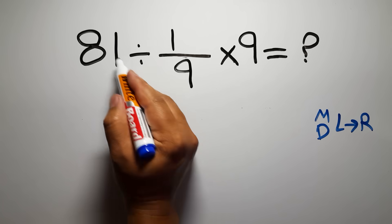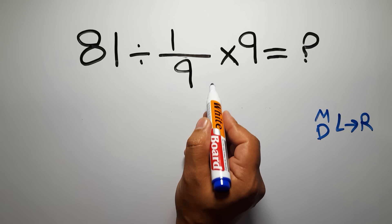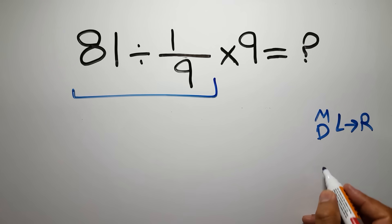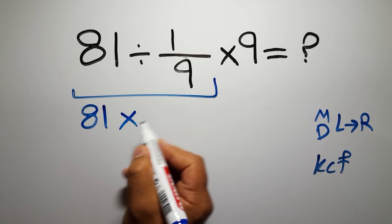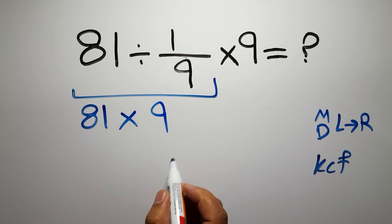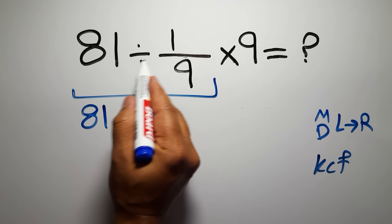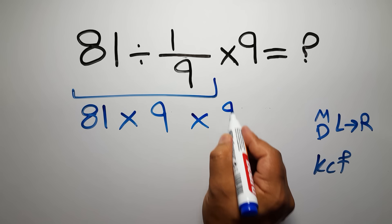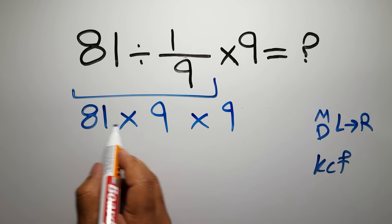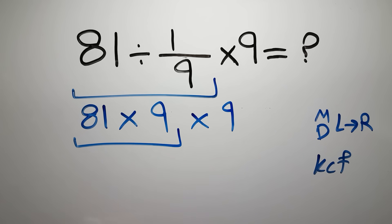So first this division: 81 divided by 1 over 9. According to the KCF rule, K stands for keep, C stands for change, and F stands for flip. We can write 81 times 9. Keep the first fraction, change division to multiplication, and flip the second fraction. And here we have times 9.